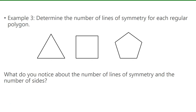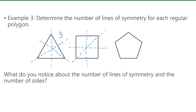In example three, we have to determine the number of lines of symmetry for each regular polygon. For this equilateral triangle, I can draw a line straight down the middle and fold it over, fold it along a second line, and fold it along a third line — so this triangle has three lines of symmetry. For the square, I can fold it across, fold it down, and also fold it diagonally in two directions, so the square has four lines of symmetry.